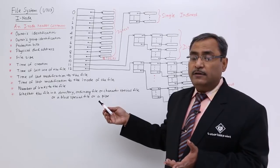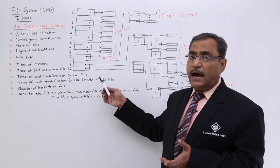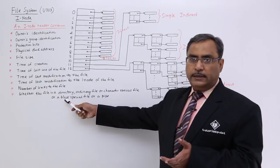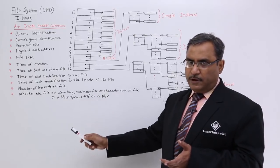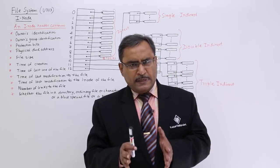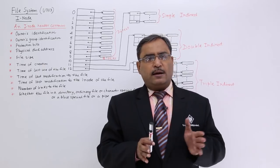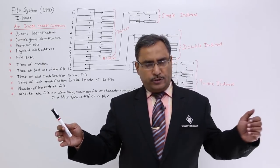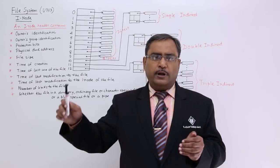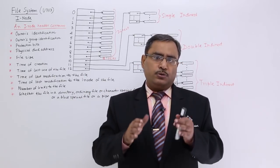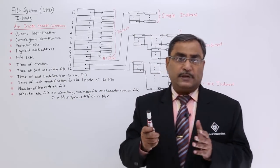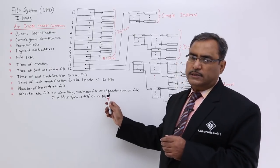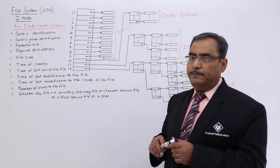In Unix operating system, each device is interfaced through a file system. So the inode indicates what is the nature of the file — whether it is an ordinary file, a directory, a character or block special file, or a pipe. A pipe is a file that takes some inputs, processes them, and redirects the output.